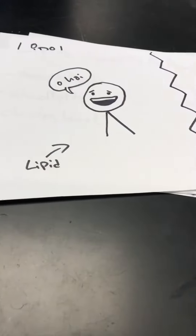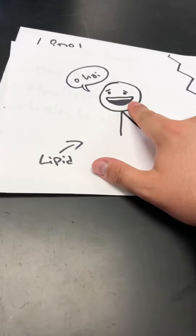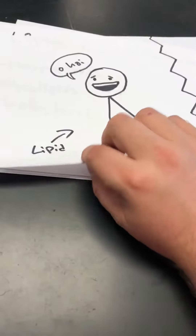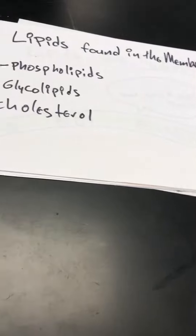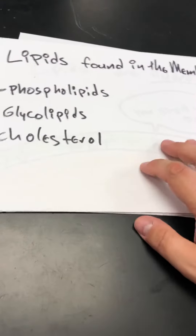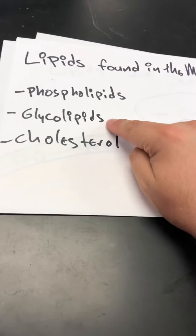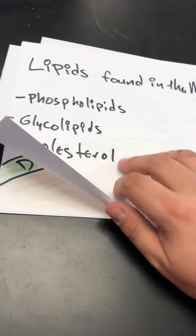What's up guys, this is Mr. Benson and I'm going to talk about cell membranes. Cell membranes are made out of lipids. There are three types of lipids found in cell membranes: we've got phospholipids, glycolipids, and cholesterols.